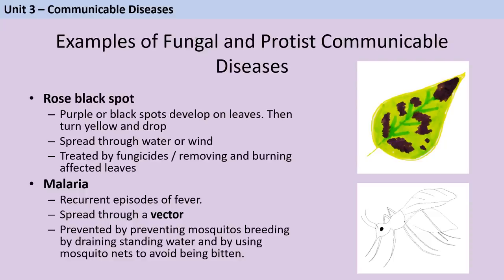Malaria is caused by a protist and causes recurrent episodes of fever. It's spread by mosquitoes, which are the vector — something that picks up a pathogen and moves it somewhere else. The protist spends part of its life in a human and part in a mosquito. Prior to laying eggs, the female mosquito needs a blood meal, so she bites a human; if that human has the malarial protist in their blood, she ingests the protist, and the next time she bites a new human she inoculates them with the protist. To control the spread, we need to stop mosquitoes from biting humans — by draining standing water (bogs and swamps) where they lay eggs, or using mosquito nets to prevent mosquitoes reaching humans while they sleep.